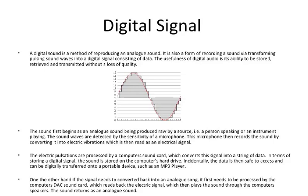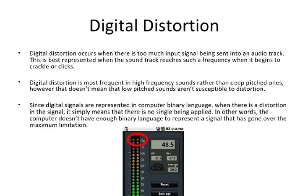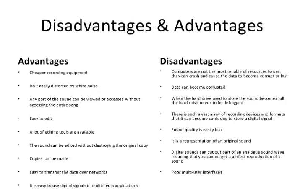Digital systems are used extensively in computation and data processing, control systems, communications, and measurement. Digital systems have a number of advantages over analog systems. Many tasks formerly done by analog systems are now being performed digitally. The chief reasons for the shift to digital technology are summarized below.